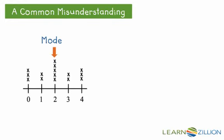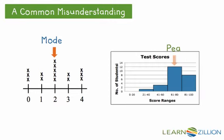Common misunderstanding. In a dot plot, we can talk about the mode or the number that occurs most often, in this case 2. In a histogram, we talk about it in terms of a peak because we are looking at a range. So in this case, the range of 61 to 80 is the peak.